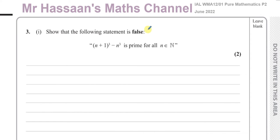This question is one of those from the new topic of proofs and it says show that the following statement is false. We're going to use proof by counterexample to show that the statement that (n+1)³ minus n³ is prime for all n which are elements of the natural numbers.